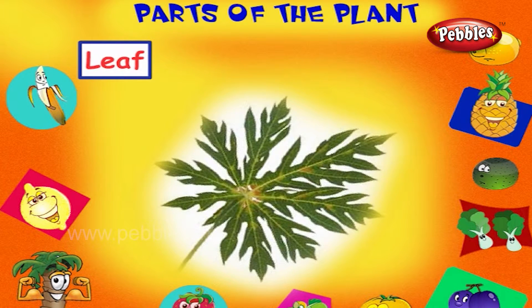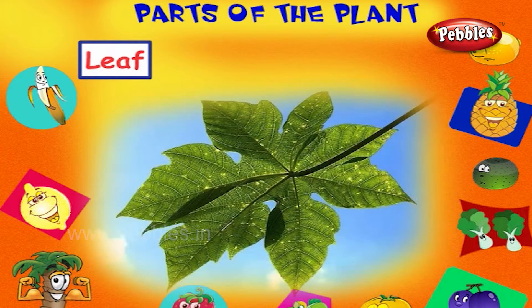This is a leaf. It helps the plant to prepare food from the sun. It also prepares oxygen for us to breathe.